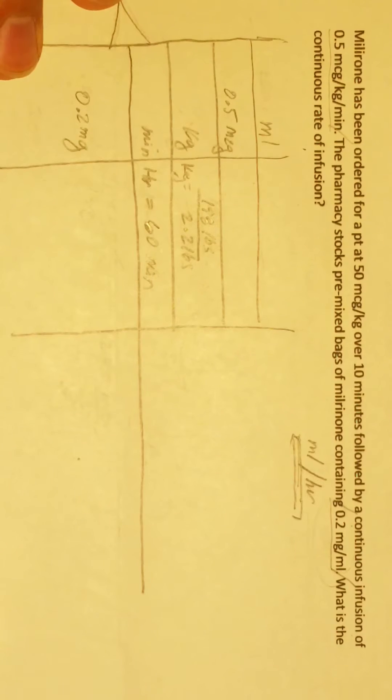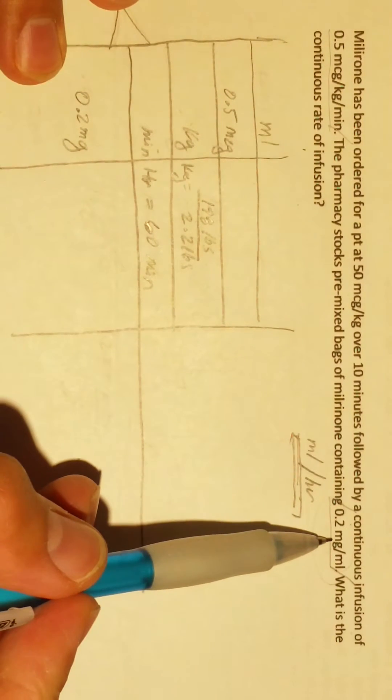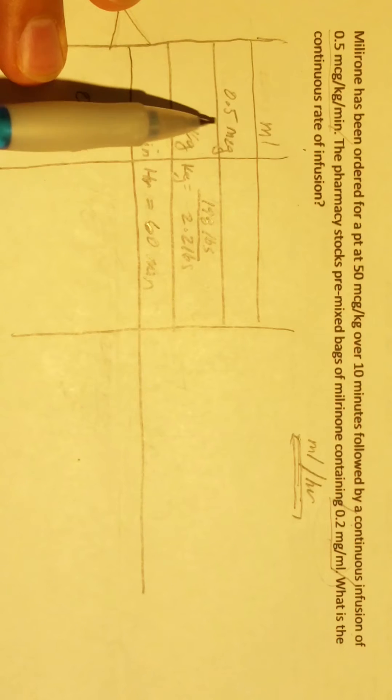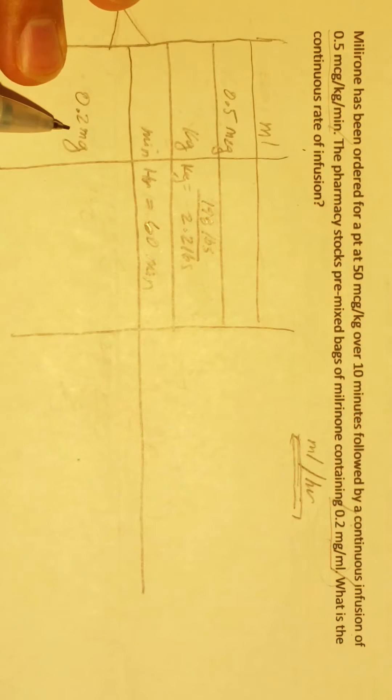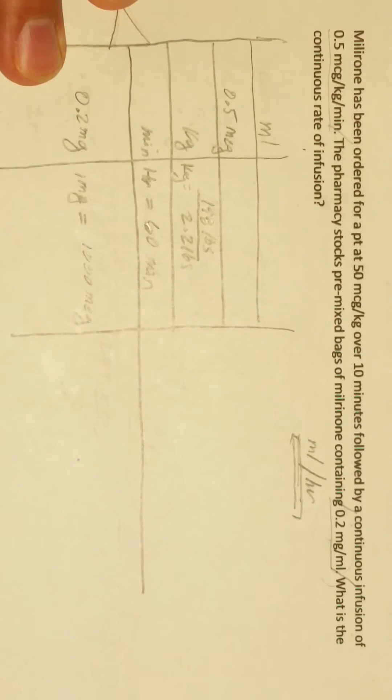We cannot proceed with the computation yet because 0.2 milligrams needs to be in micrograms to match our other units. So we convert: one milligram is equivalent to 1,000 micrograms.